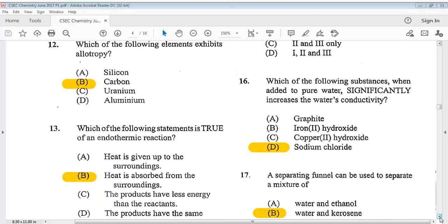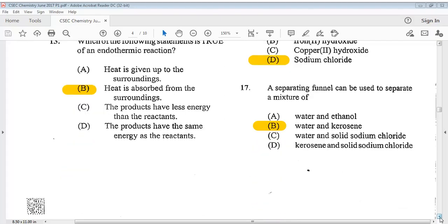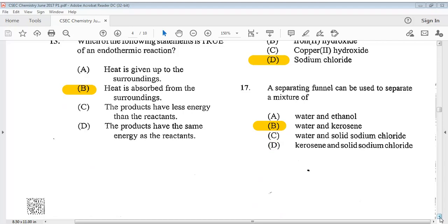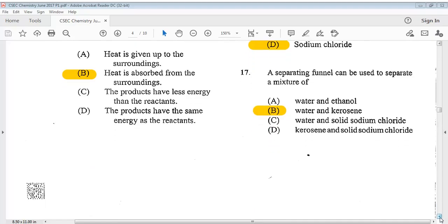Number 16, which of the following substances when added to pure water significantly increases the water's conductivity? The answer is D, sodium chloride. Question 17, a separating funnel can be used to separate a mixture of? B, water and kerosene.